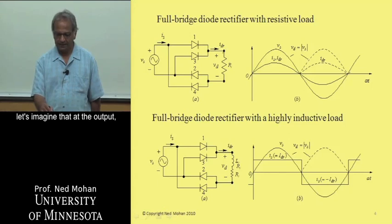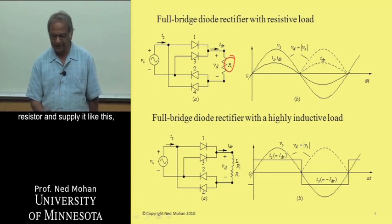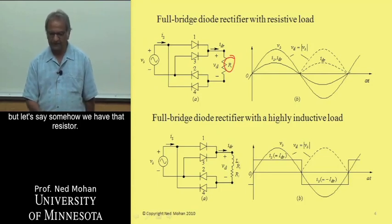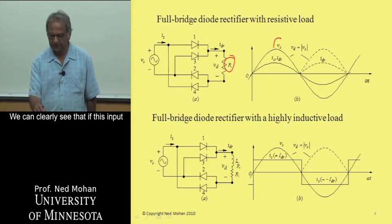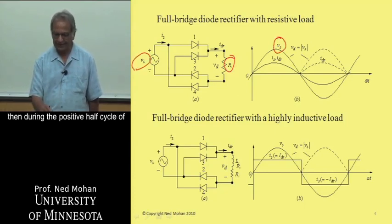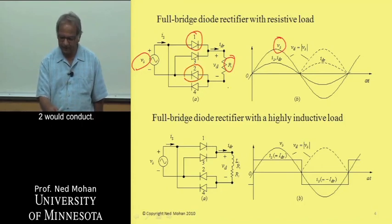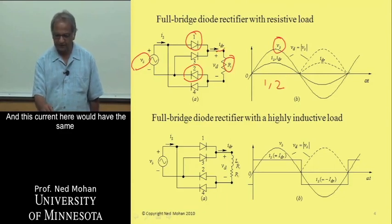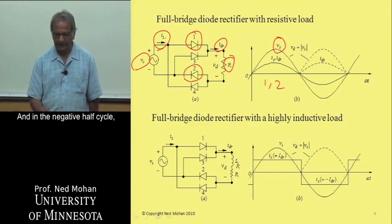But before we get into that, let's imagine that at the output, the DC side, we have a resistor connected. Again, nobody is going to actually put that resistor and supply it like this, but let's say somehow we have that resistor. So what would be the waveforms in this circuit? You can clearly see that if this input voltage here is sinusoidal, then during the positive half cycle of this input voltage, diode one and diode two would conduct. And in the negative half cycle, three and four would conduct.